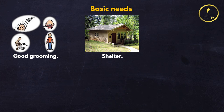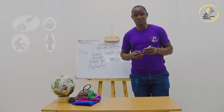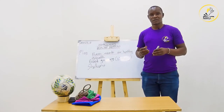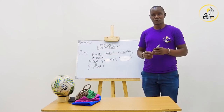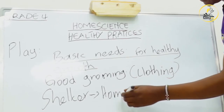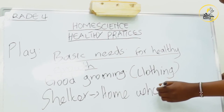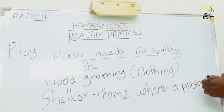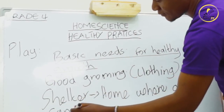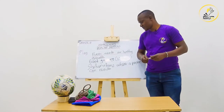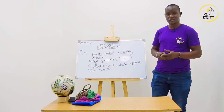Our second basic need is shelter. Shelter can be in the form of a home or a place where you are going to stay. It should be somewhere conducive where you can live and grow up in a good way. When we talk of shelter, we are referring to a home where a person can reside.